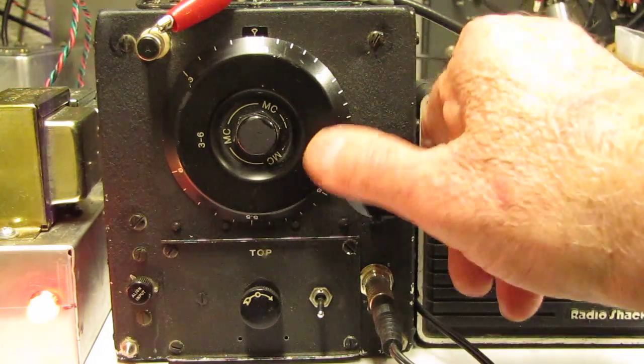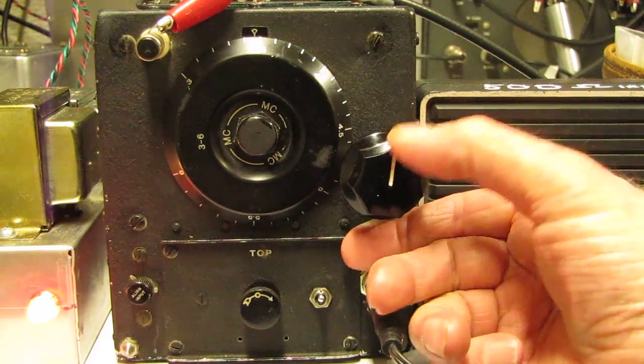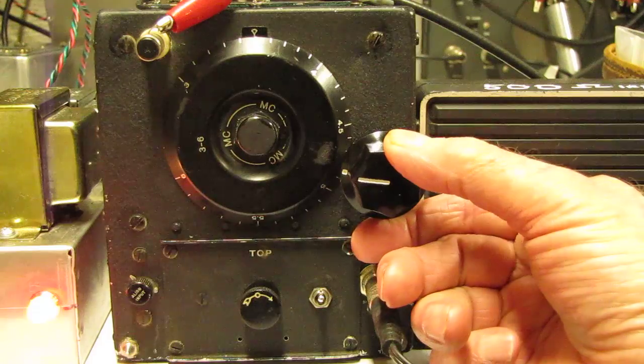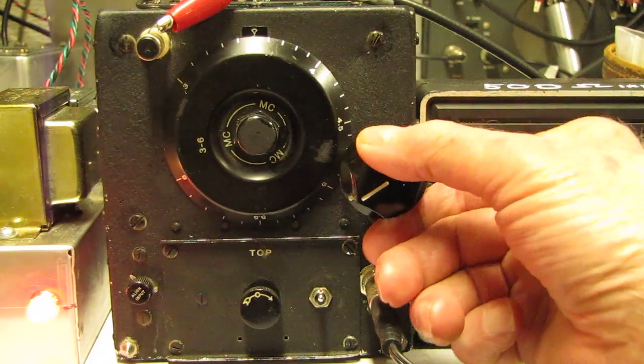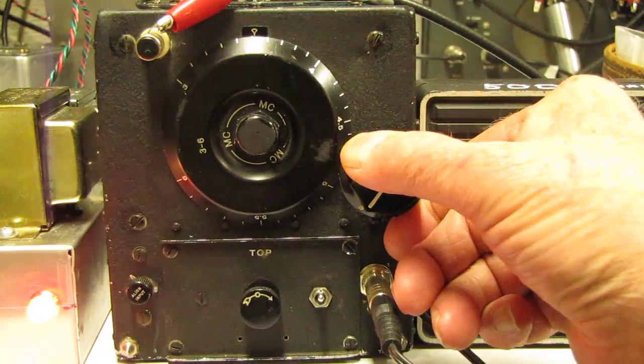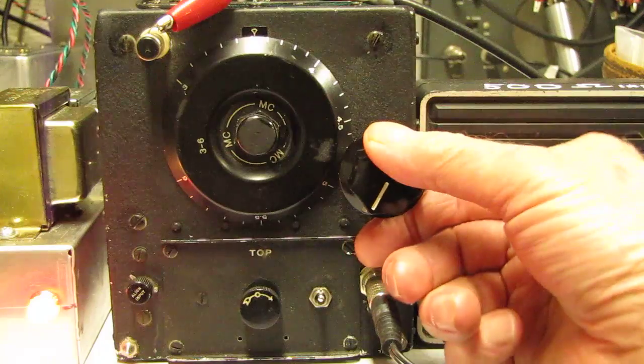Beginning at three and a half megahertz you'll find an amateur radio band and a few minutes ago I was listening to this receiver and right about here I heard a station from Africa coming in on Morse code.